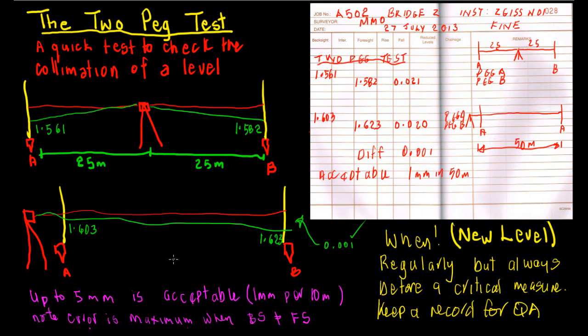So if it gets up around the five millimeter mark, certainly time for a service. Get it in there and get it serviced. It's obviously had some sort of a bump or gone out of adjustment. So the two peg test.